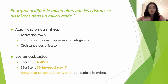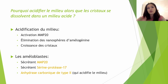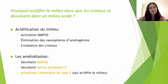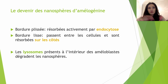Cette alternance entre bordures lisses et plissées aurait pour rôle une balance entre l'acidification et la neutralisation du pH, une élimination des fragments protéiques, et le transport du calcium pour permettre la formation des cristaux. Pourquoi acidifier le milieu alors que les cristaux se dissolvent dans un milieu acide ? Pour que les cristaux croissent en épaisseur, une acidification est nécessaire car les nanosphères d'amélogénine sont éliminées par la MMP20, qui nécessite un pH légèrement acide pour fonctionner de façon optimale. Les améloblastes vont sécréter la MMP20 et la sérine protéase 17, et présenter dans la région du cytoplasme proche de la bordure plissée une quantité importante d'anhydrase carbonique de type 2, qui va libérer des protons pour acidifier le milieu extracellulaire. La MMP20 va s'activer en milieu acide et entraîner la fragmentation de toutes les nanosphères d'amélogénine.